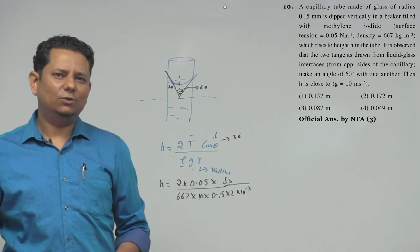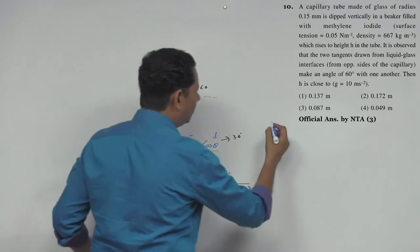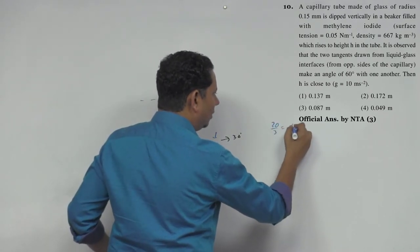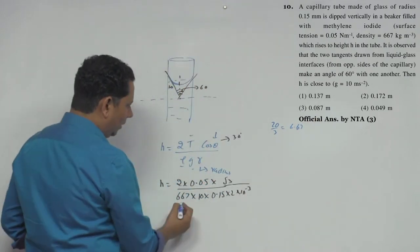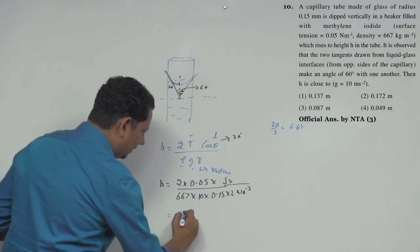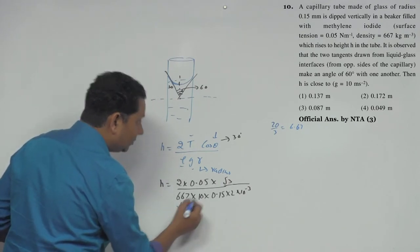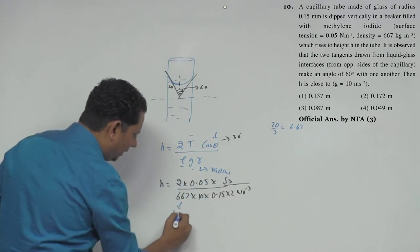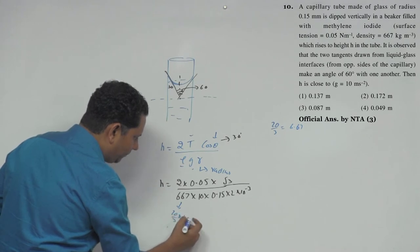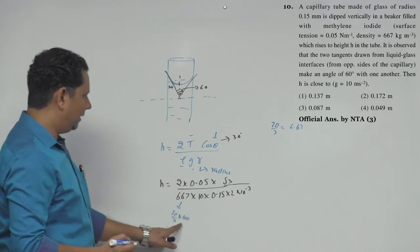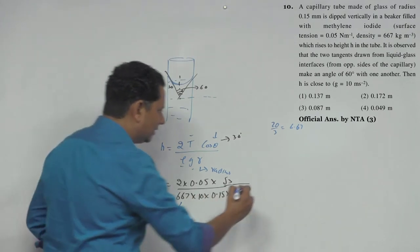For fast calculation: note that 667 ≈ 20/3 × 100, which is an approximate way to write it. So 667 can be written as (20/3) × 100. Using this, the denominator terms simplify, and the factor of 30 in the denominator also cancels out accordingly.